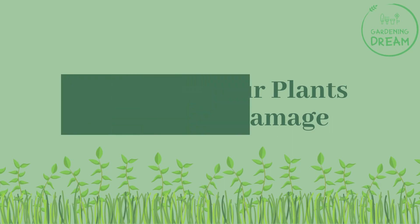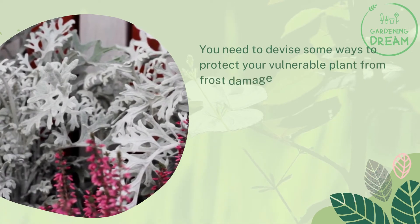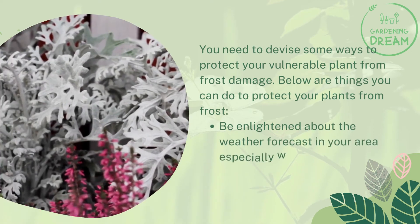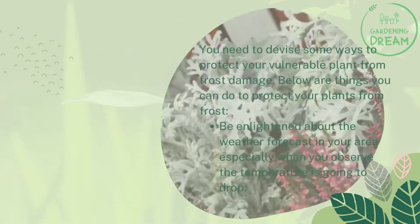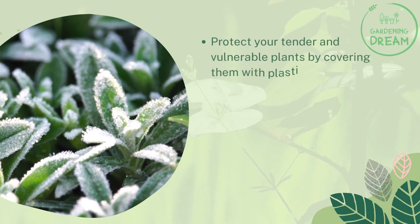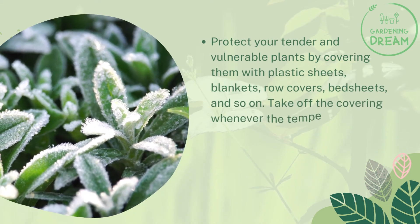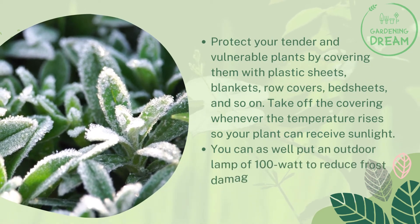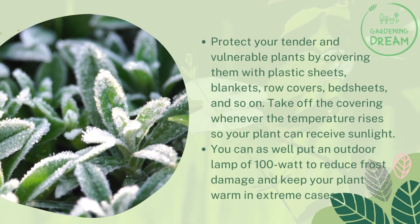You need to devise some ways to protect your vulnerable plants from frost damage. Be aware of the weather forecast in your area, especially when the temperature is going to drop. Protect your tender plants by covering them with plastic sheets, blankets, row covers, bed sheets, and so on. Remove the covering whenever the temperature rises so your plant can receive sunlight. You can also put an outdoor lamp of 100 watts to reduce frost damage and keep your plant warm in extreme cases.